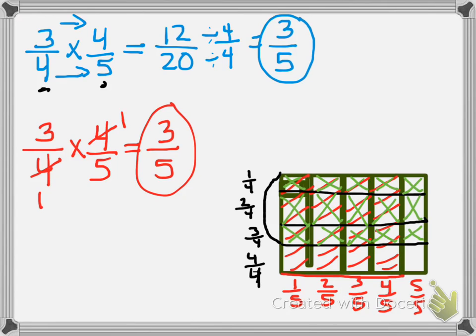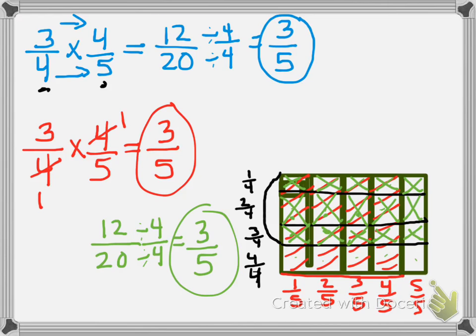Now I count how many boxes are shaded twice. How many have the red and the green? So I have 1, 2, 3, 4, 5, 6, 7, 8, 9, 10, 11, 12, 13, 14, 15, 16, 17, 18, 19, 20, 12 out of 20. And again, I know I can divide both of these numbers by 4, and I get 3 fifths as my answer.